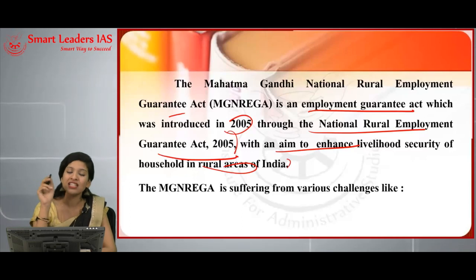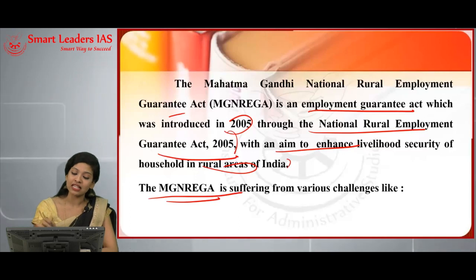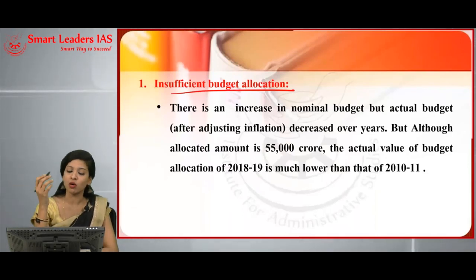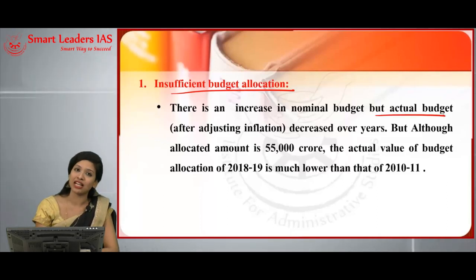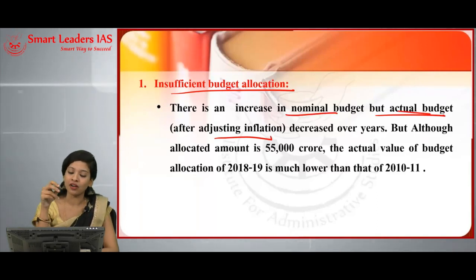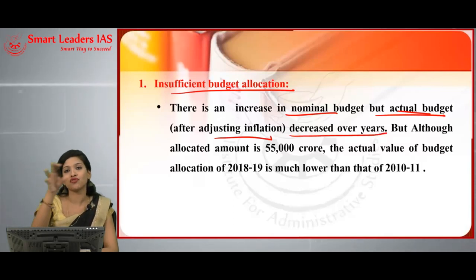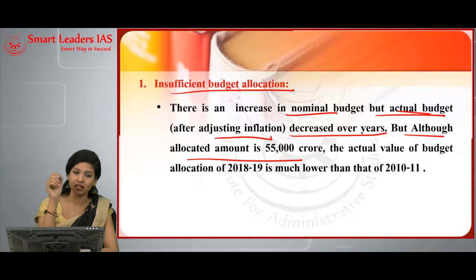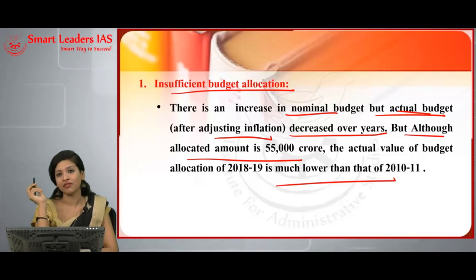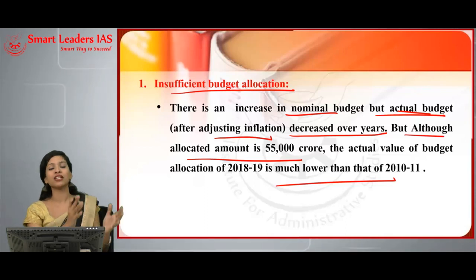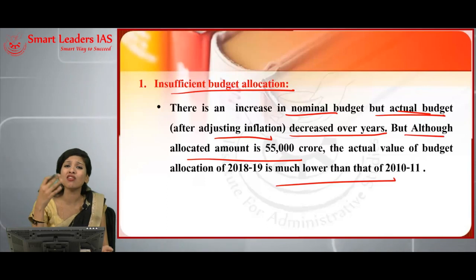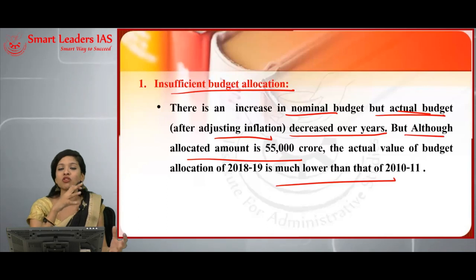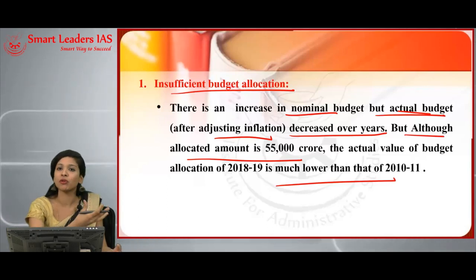Despite this aim, MGNREGA is suffering from various challenges. Point one: insufficient budget allocation. There is an increase in the nominal budget, but in terms of the actual budget — after adjusting for inflation — it has literally decreased over the years. Although the allocated amount is stated as around ₹55,000 crore, the actual value for 2018-19 is much lower than that of 2010-11. When funds are not properly reaching the scheme, whatever activities this program is supposed to do get delayed, since funds are essential to carry out the programs.